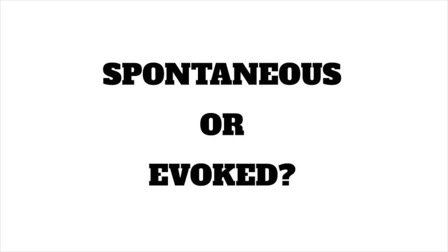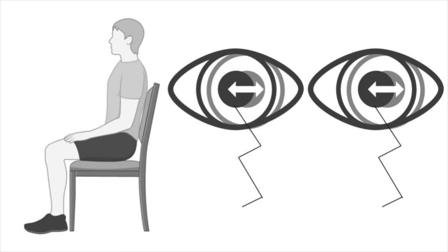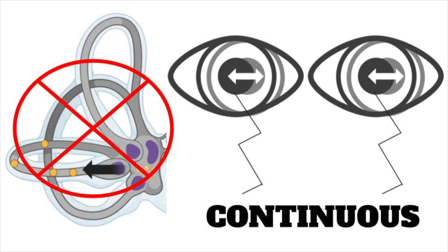There's one more question: is the nystagmus spontaneous or is it evoked? If the patient is sitting up, looking at you, and you've done no tests — no head impulse test, no Dix-Hallpike — and the eyes are demonstrating nystagmus second after second, minute after minute, that is called continuous nystagmus. Continuous nystagmus is never BPPV. It's either central or peripheral, and if it's continuous and unidirectional, it's peripheral labyrinthitis.